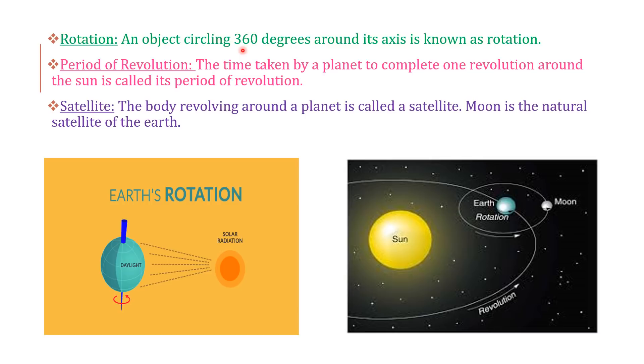Rotation - an object circling 360 degrees around its axis is known as rotation. This is the earth. This is the sun. This is the axis. It rotates on its axis and completes one round in 24 hours.